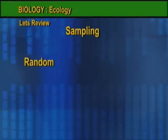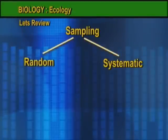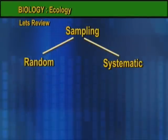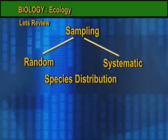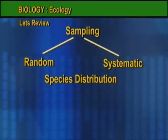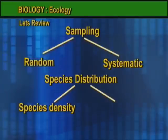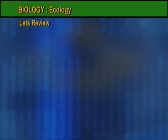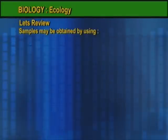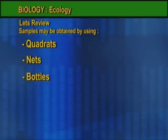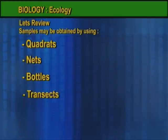Sampling may either be random or systematic. From the samples collected, one is able to estimate the number of organisms within a given area of ground or volume of water. Samples may be obtained by using quadrats, nets, bottles, and transects.